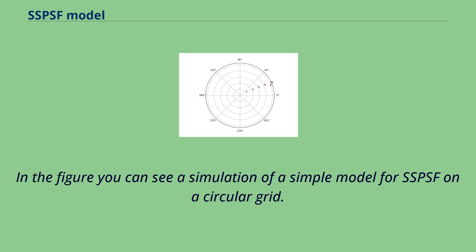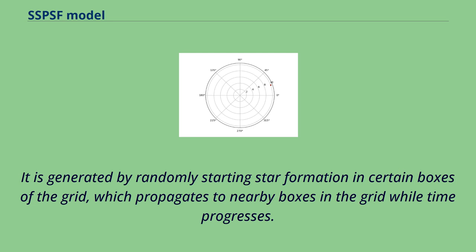In the figure you can see a simulation of a simple model for SSPSF on a circular grid. It is generated by randomly starting star formation in certain boxes of the grid, which propagates to nearby boxes in the grid while time progresses.